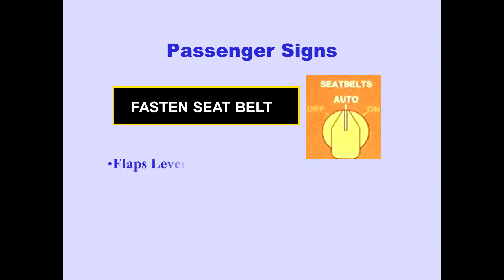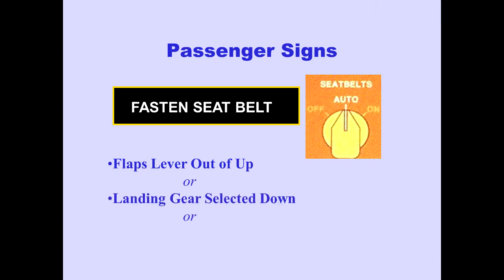With the fasten seat belt sign selector in auto, the fasten seat belt signs automatically illuminate when flaps are selected down, or when the landing gear lever is selected down, or if airplane altitude is below 10,300 feet.